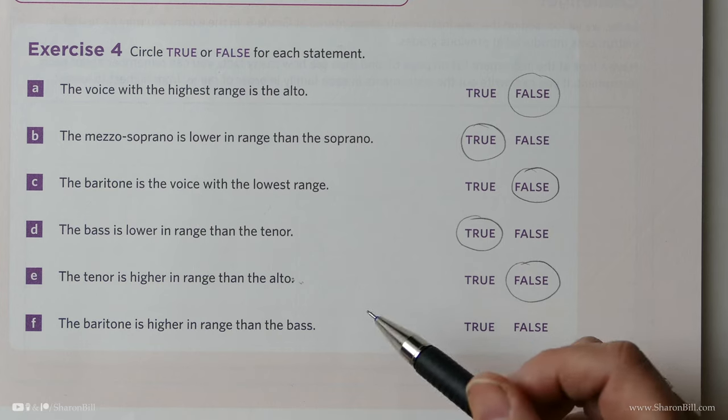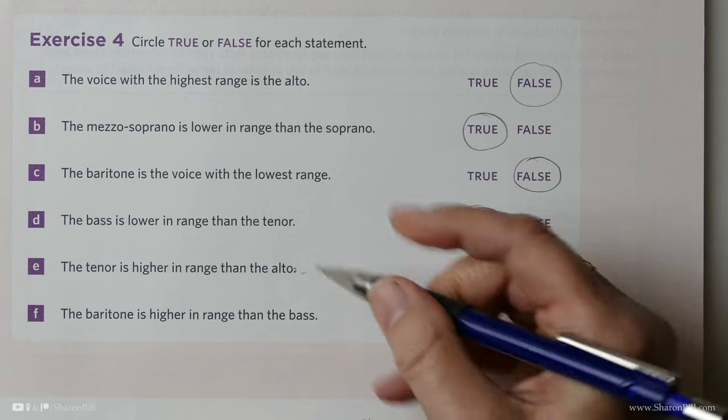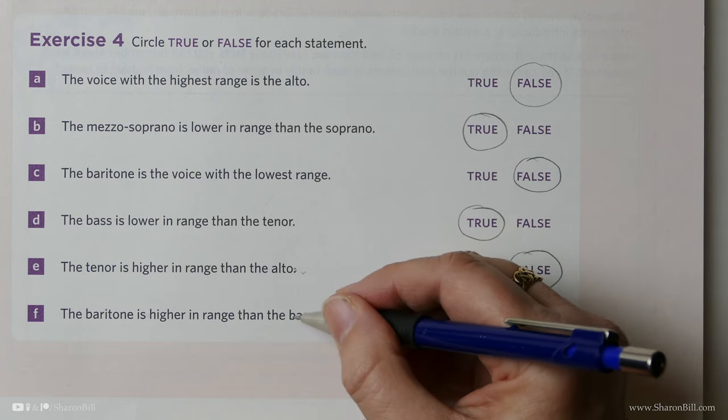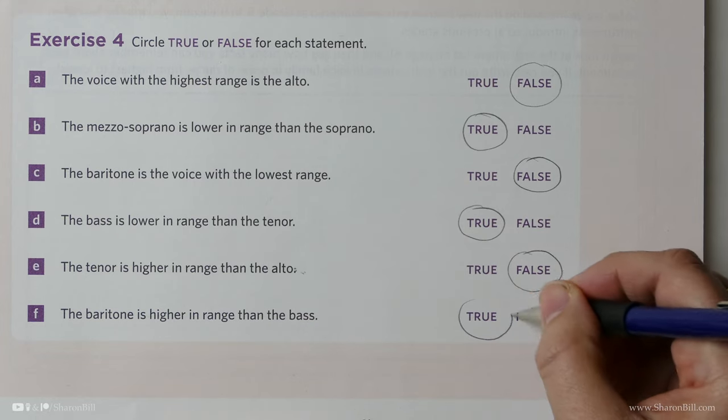So, is it true or is it false that the baritone is higher in range than the bass? Yes, it is true. Everything is higher than the bass, and actually the baritone is the very next one up.